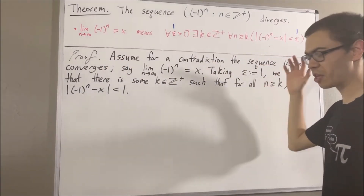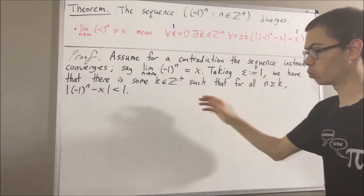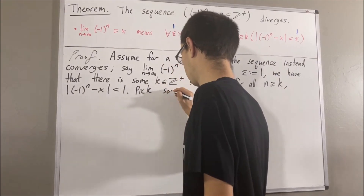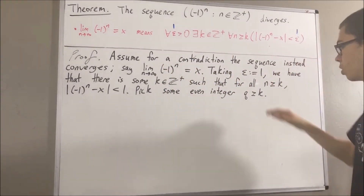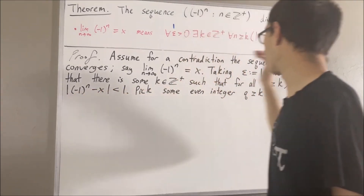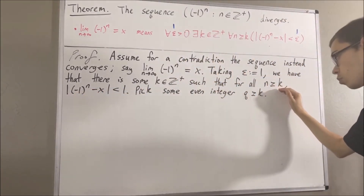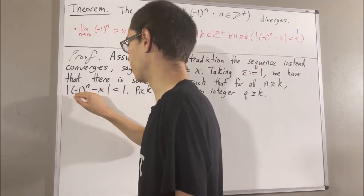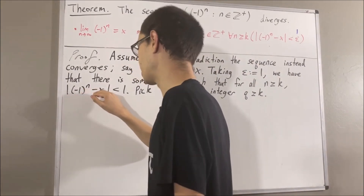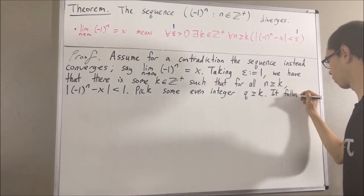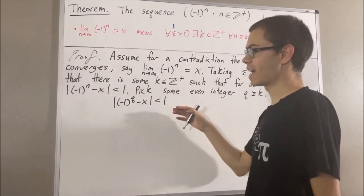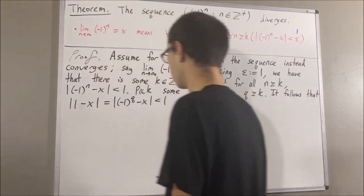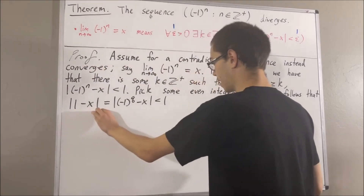Now, of course, there is some even integer greater than or equal to k. Let's call that integer q. Since this statement works for every integer greater than or equal to k, it must work, in particular, for q. So, taking n to be q, we have that the absolute value of negative 1 to the power of q minus x is less than 1. And since q is even, negative 1 to the power of q equals 1. So, the absolute value of 1 minus x is less than 1.